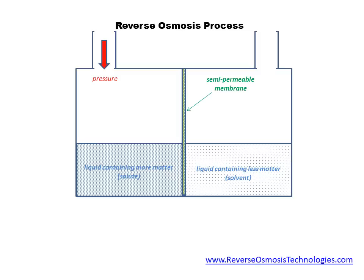Water containing two different concentrations of matter is represented by the two shaded areas inside the container. The darker shading represents the water containing a higher concentration of matter, or the solute.